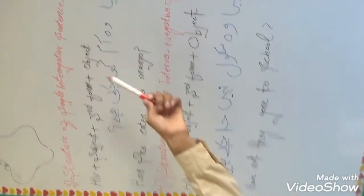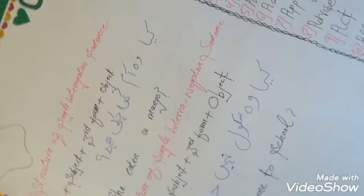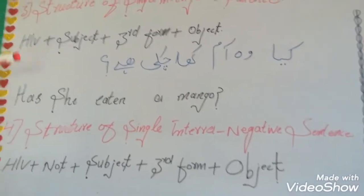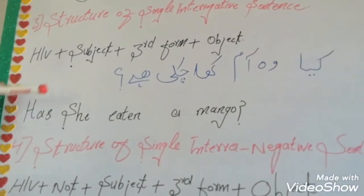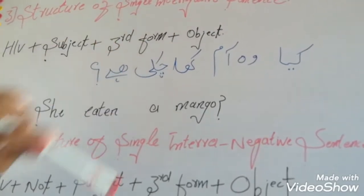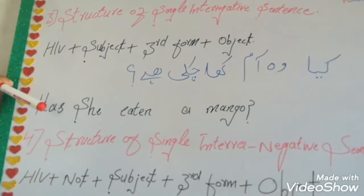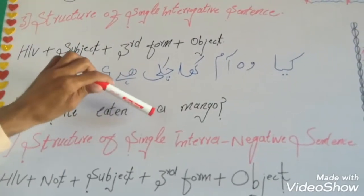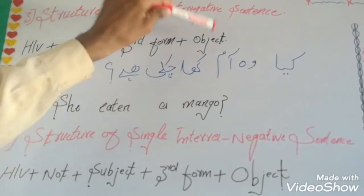For example, if it's related to present perfect tense, how can we change it into English? First of all, helping word will be put, then subject, then third form of the verb, then the object. 'Has' is the helping word in this sentence, 'she' is the subject, 'eaten' is the third form, and 'mango' is an object.